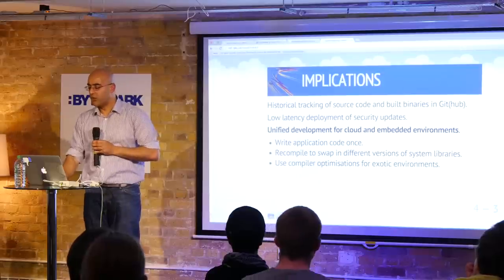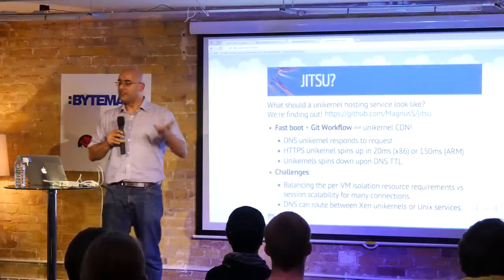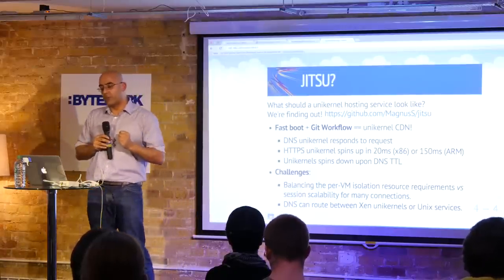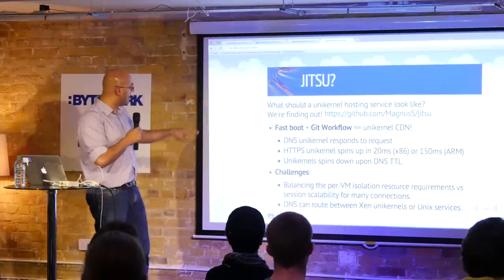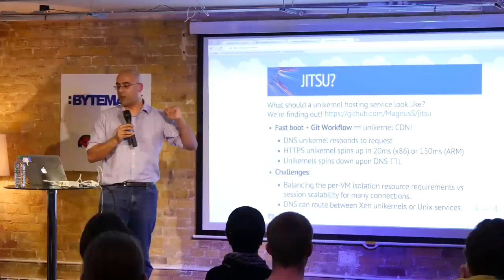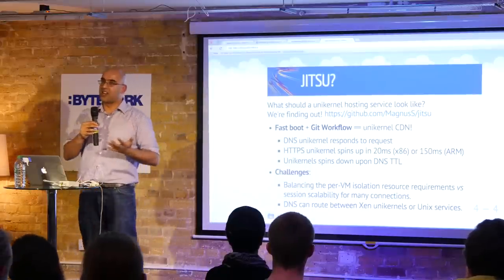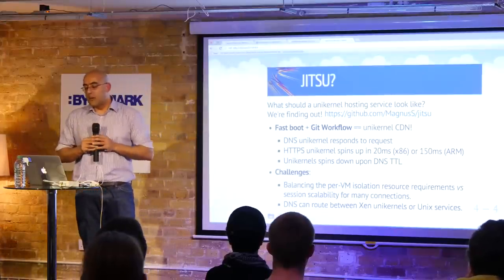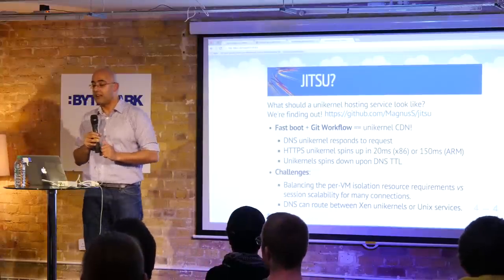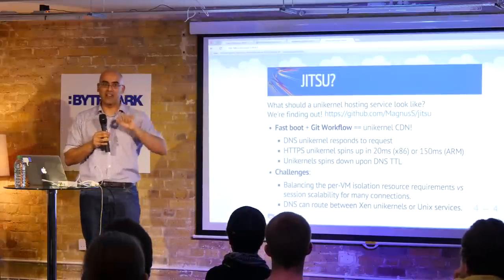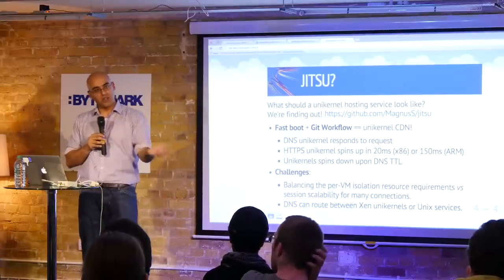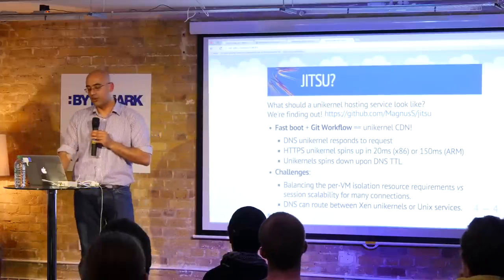This also gives you the ability to write the application once and deploy to multiple sites. The reason this is called Jitsu is that we've been wondering what a unikernel hosting service should look like. Given this combination of Git workflow and fast boot, Magnus has been building a unikernel that will boot from Git, respond to a request, spin up in 20 milliseconds, and spin down based on a DNS TTL. You don't want every single request routed to a new unikernel, but we can now balance off trade-offs — choosing between a specialized VM with all the isolation Xen provides versus routing to a normal NGINX stack in Unix.